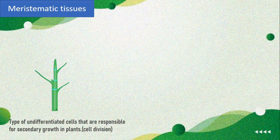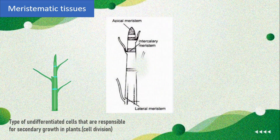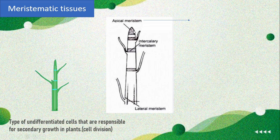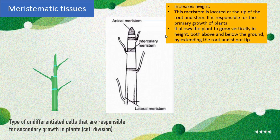Meristematic tissues are undifferentiated cells that are responsible for growth in plants and help in cell division. There are three parts: apical meristem, intercalary meristem, and lateral meristem. Apical meristem is present at the tip of the root and the stem. It is responsible for the height of plants and allows plants to grow vertically, both above and below the ground.